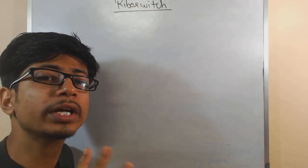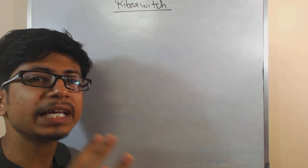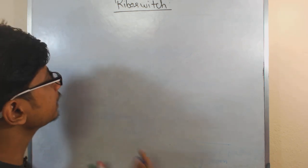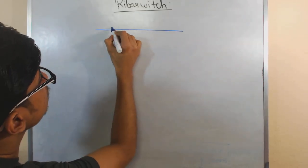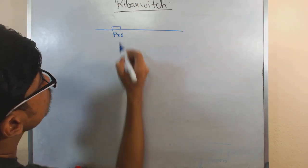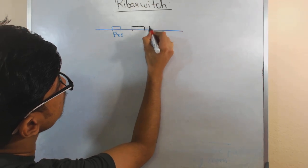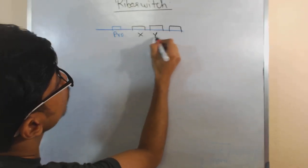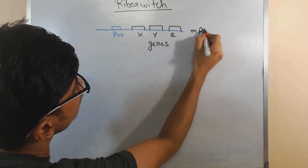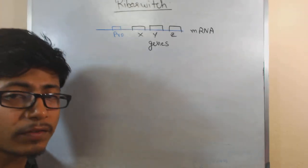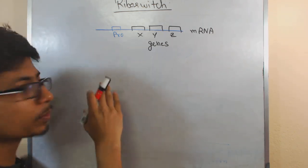A riboswitch is a kind of auto-regulatory unit present in the mRNA. If you look at the mRNA structure, there is a promoter region and there are downstream genes that will be synthesized — different genes x, y, z are present. This is the mRNA, but in the case of a riboswitch, there are particular structures present near the promoter segment.